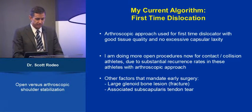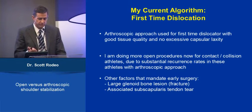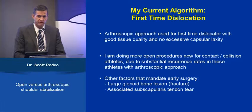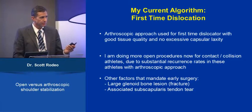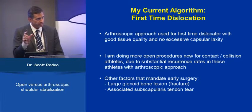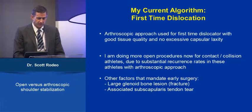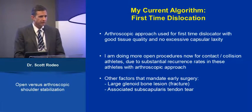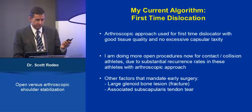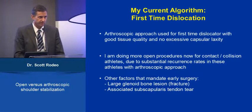The arthroscopic approach can generally be used for the first-time dislocator if there is good tissue quality and no excessive capsular laxity. However, I am doing more open procedures now for contact or collision athletes due to substantial recurrence rates with arthroscopic approaches in these patients — that 17-year-old high school football player has a high risk of recurrence arthroscopically, so we're tending to go back to open surgery in that setting. Other factors leading to early surgery include a large glenoid bone lesion — usually an acute fracture — or an associated subscapularis tendon tear.